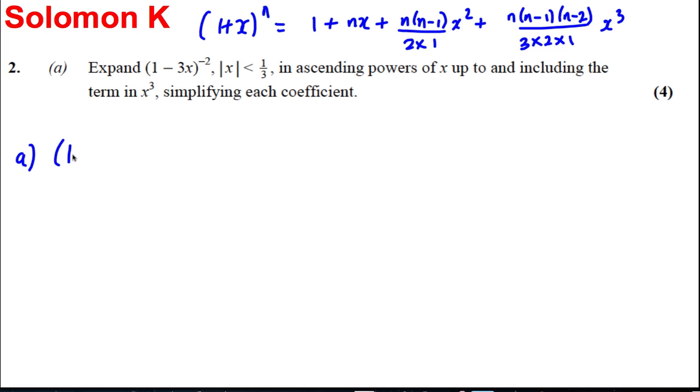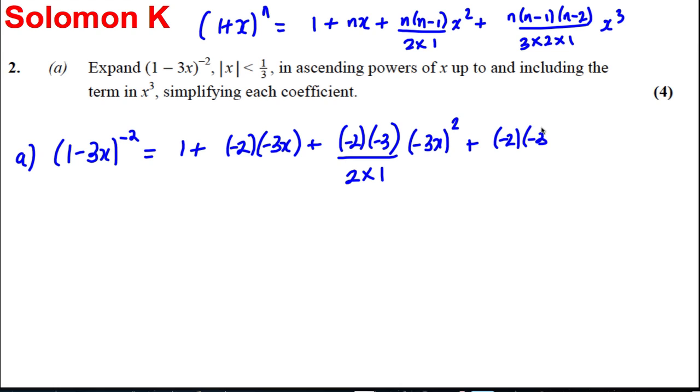So for part A, (1 - 3x)^(-2) is going to be equal to 1 plus everything in brackets, remember, -2 multiplied by -3x. Don't do it in your head. Show your working and then simplify later. Plus -2(-3)/(2×1) × (-3x)² plus -2(-3)(-4)/(3×2×1) multiplied by (-3x)³ plus dot dot dot.